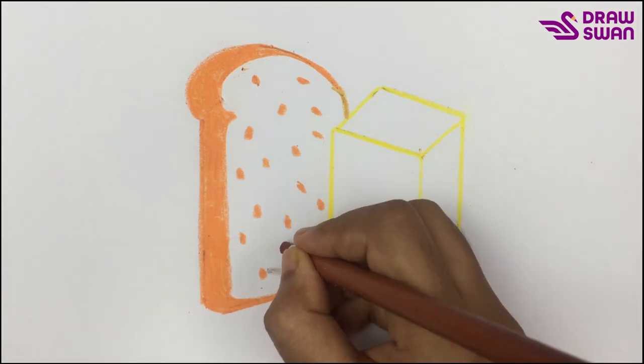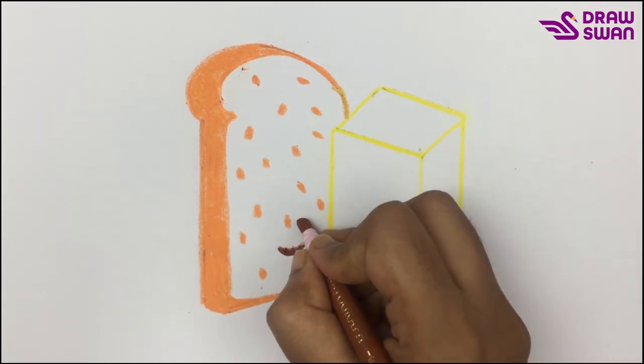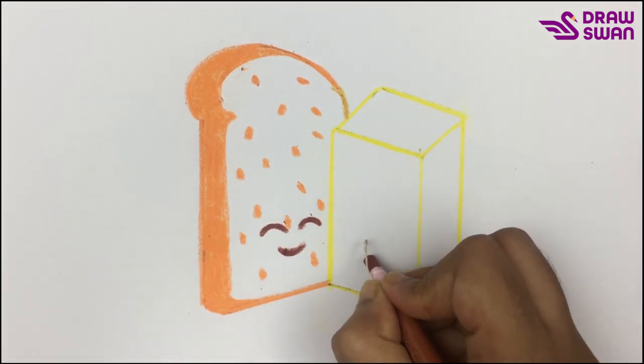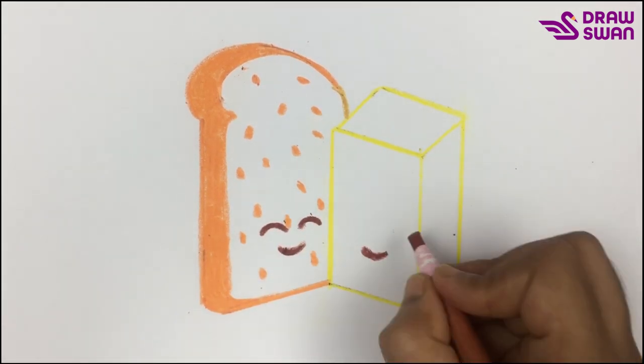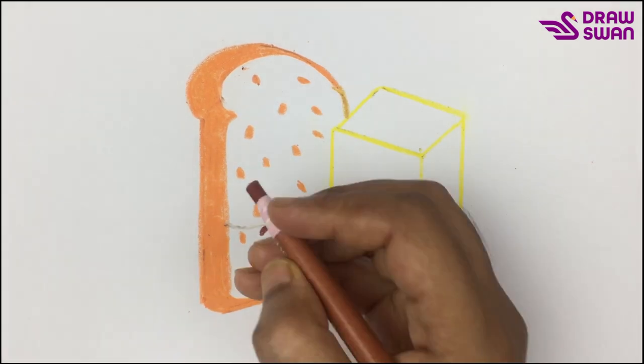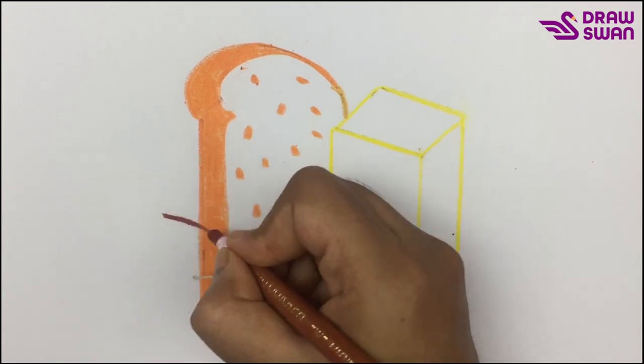Now I'm using my brown colored pencil. To draw their hands, I'm using the same brown colored pencil.